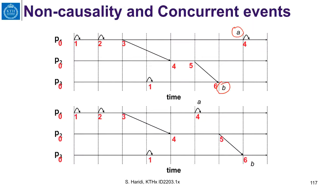Here is execution beta 1 and this is beta 2. You can see these two executions are similar, but in the first execution event A occurs after event B, whereas in the second execution event A occurs before event B. Notice that causality is respected in both executions, so each process sees exactly the same sequence of events.